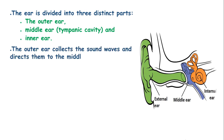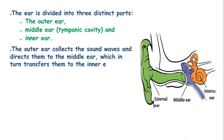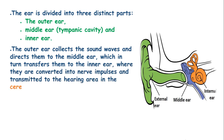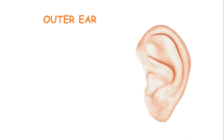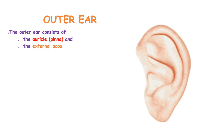The outer ear collects the sound waves and directs them to the middle ear, which in turn transfers them to the inner ear where they are converted into nerve impulses and transmitted to the hearing area in the cerebral cortex. The outer ear consists of the auricle or the pinna and the external acoustic meatus, known as the auditory canal.